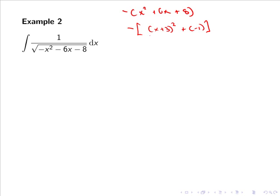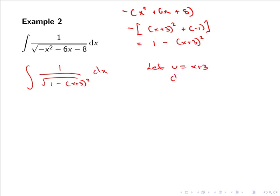As the minus sign outside the brackets multiplies the whole expression, minus times minus gives plus 1, so we get 1 minus x plus 3, all squared. Hence we rewrite the integral as 1 over the root of 1 minus x plus 3, all squared, dx. Using the substitution u equals x plus 3, du equals dx. Noting that 1 squared is simply 1, our integral becomes the integral of 1 over the root of 1 squared minus u squared du, which integrates to give sine inverse of u over 1 plus c.